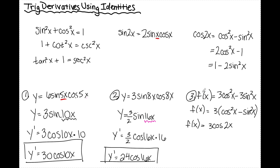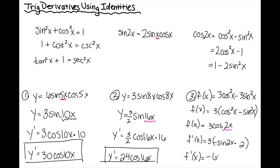Careful with your notation — I haven't taken a derivative yet, I've just rewritten the original function. Now when I take the derivative, I bring down the 3 and do a chain rule: cosine is the outside, 2x is the inside. The derivative of cosine is negative sine; I leave the 2x alone and multiply by the derivative of 2x, which is 2. Cleaning up: 3 times 2 is 6 with a negative, giving negative 6 sine of 2x.